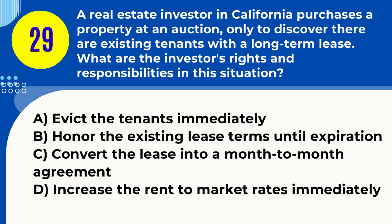Question 29. A real estate investor in California purchases a property at an auction, only to discover there are existing tenants with a long-term lease. What are the investor's rights and responsibilities in this situation? A. Evict the tenants immediately. B. Honour the existing lease terms until expiration. C. Convert the lease into a month-to-month agreement. D. Increase the rent to market rates immediately. Answer: B. Honour the existing lease terms until expiration. Explanation: In California, property buyers must honour existing long-term leases until they expire, even if the property was purchased at an auction.